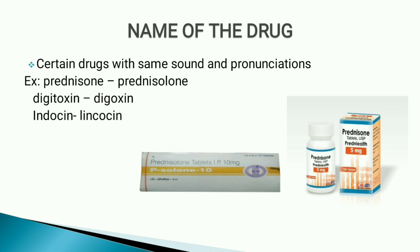Here I have shown two images: prednisone tablet and prednisolone tablet. These two are glucocorticoids. Prednisone is a pro-drug of prednisolone. Prednisone must be converted by liver enzymes to prednisolone before it can work. In people with severe liver disease, prednisolone is usually preferred.